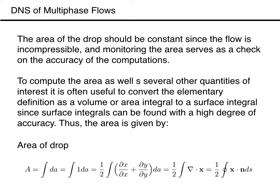For our problem we know that the volume, or area in our case, should be conserved since the flow is incompressible. We also expect the centroid of the drop in the horizontal direction to remain unchanged. These are two obvious quantities to monitor. The centroid in the vertical direction does obviously change, but it is also an obvious quantity to monitor, as is the centroid velocity. Thus, here we will examine how the drop area and the location and velocity of the centroids evolve with time.